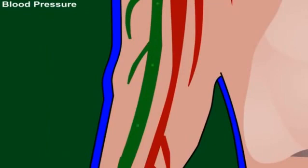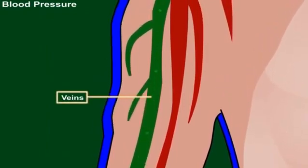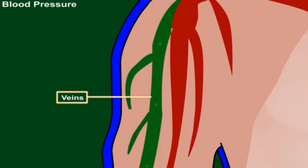When this blood is collected in veins, blood pressure is greatly reduced. So, blood pressure is low in the veins when compared to the arteries.